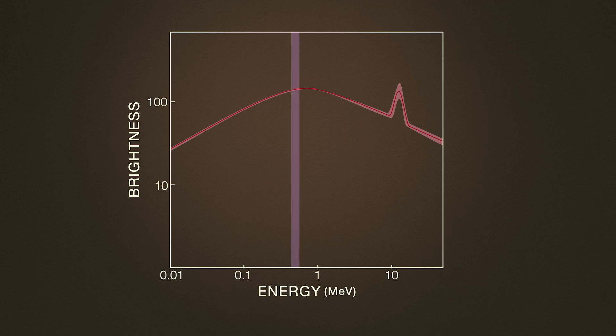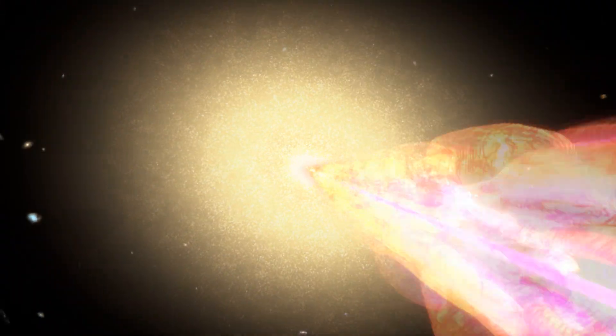For this to explain what Fermi saw, the gamma rays had to have been shifted to higher energies by their motion. This is similar to a siren rising in pitch as it races toward us. To get that boost, the particles emitting the gamma ray line must have been moving at 99.9% the speed of light.